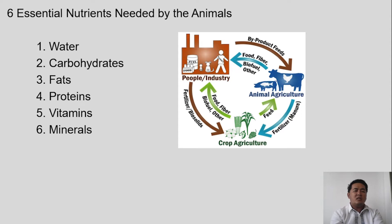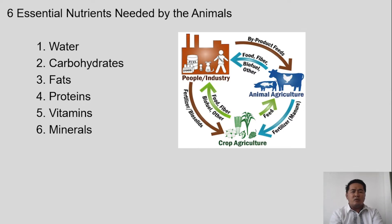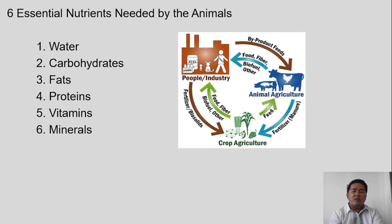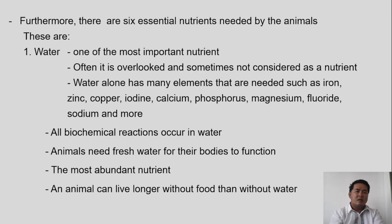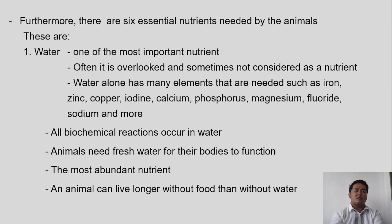So we have discussed the essential nutrients needed by animals. These cannot be missing from their diet; they must be present to meet the nutritional requirements of a certain animal. Among those six essential nutrients, we are going to discuss them one by one. First, we will discuss water.